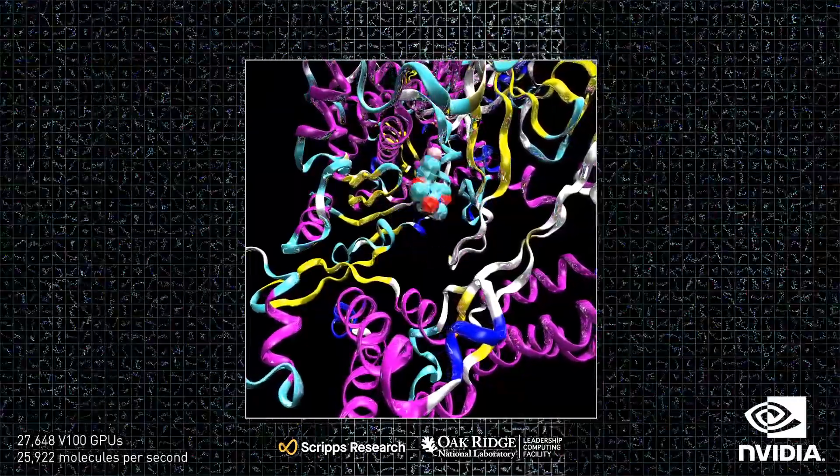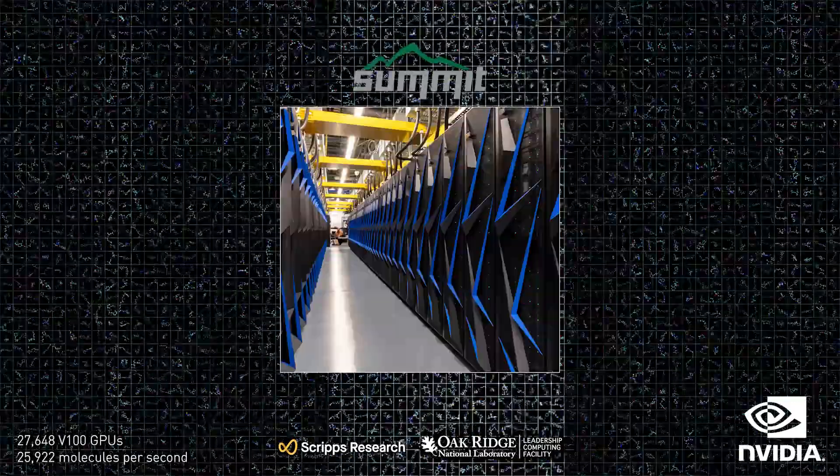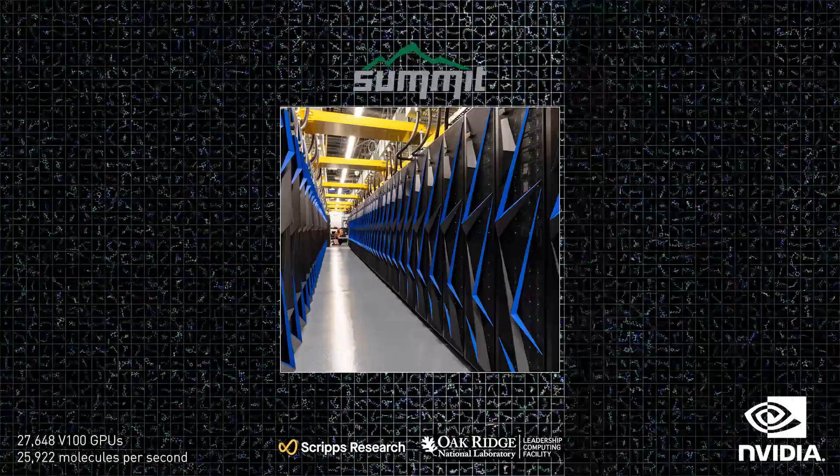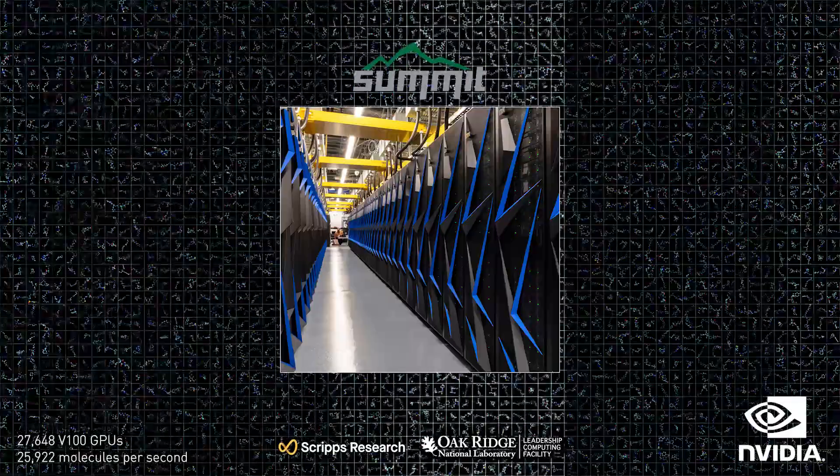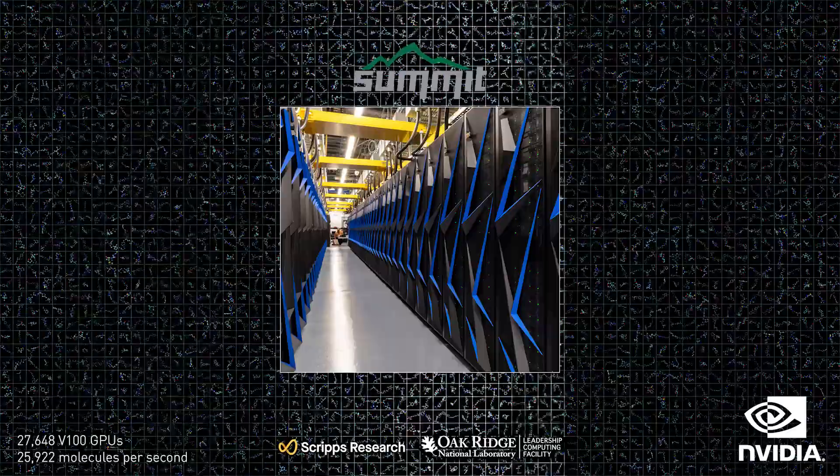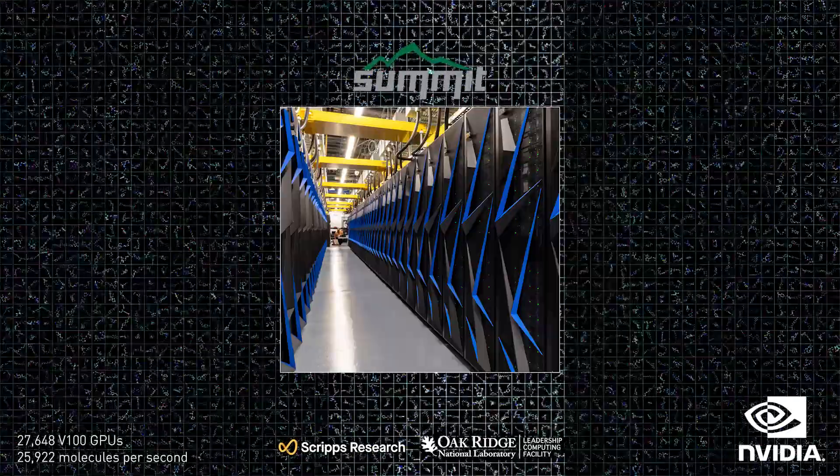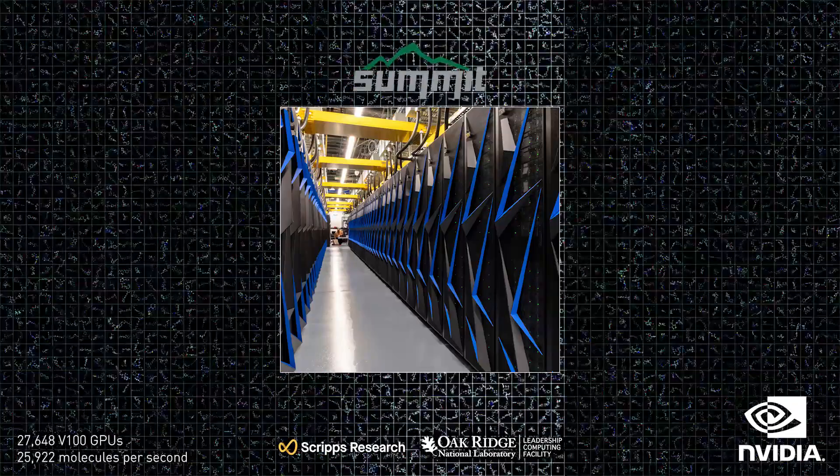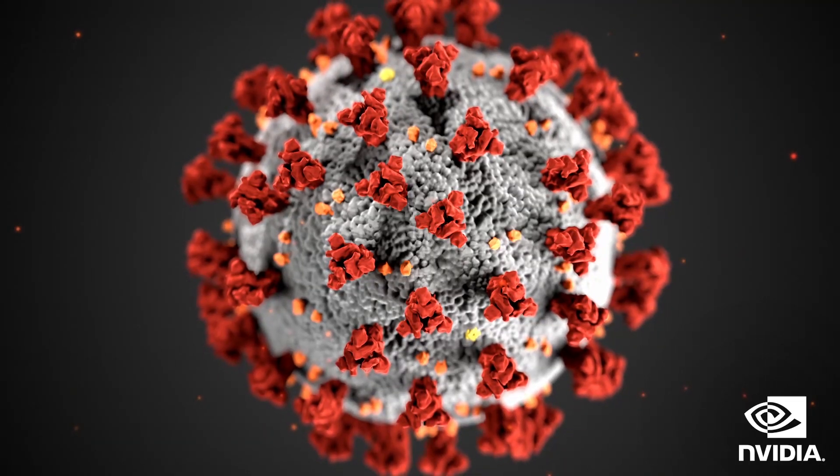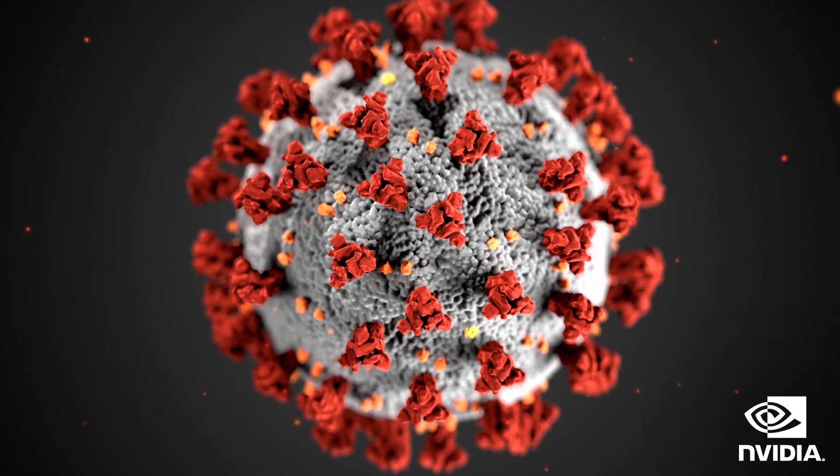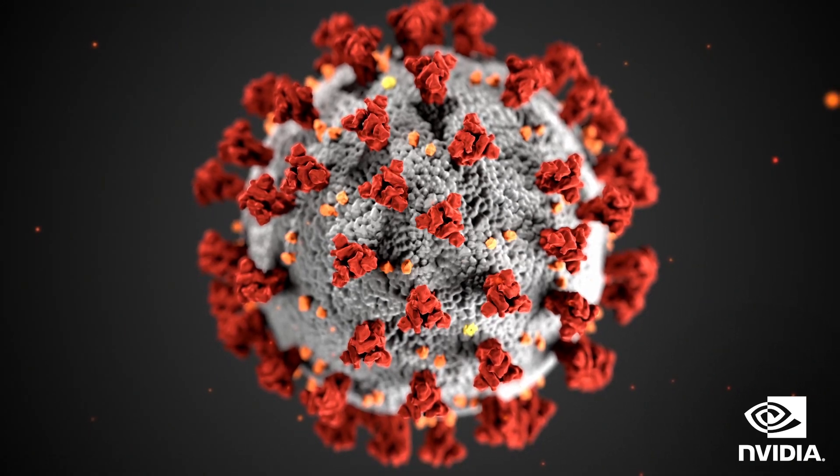All told, on each node of Summit, AutoDock running on 6 GPUs is more than 33 times faster than if it were running on all 44 CPU cores in the node. The race to find a cure is on, and GPUs are accelerating the scientific computing that's moving us closer to finding it.